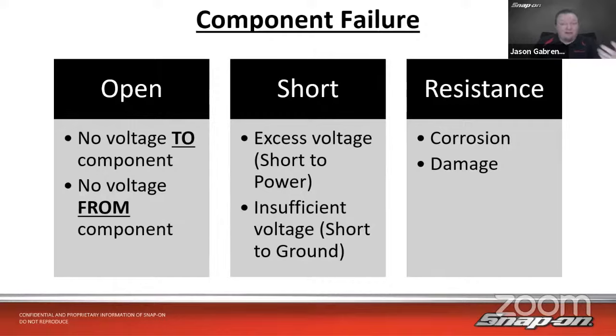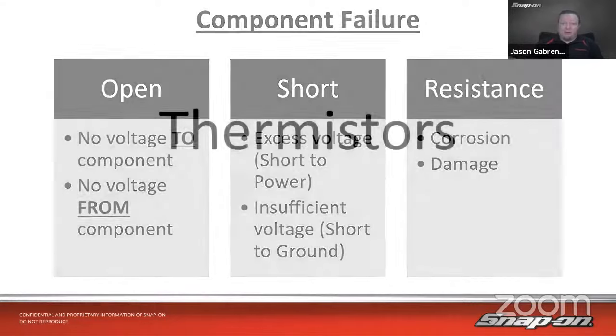And then of course we have resistance. We have the corrosion, the green fuzzy stuff that gets on all the connectors, or actual physical damage. Maybe I have a few strands left that are making a connection, but it's not enough to flow sufficient amperage. So that would be high resistance in that line. When we're looking for a component failure, we're thinking about something falling into one of those three buckets.